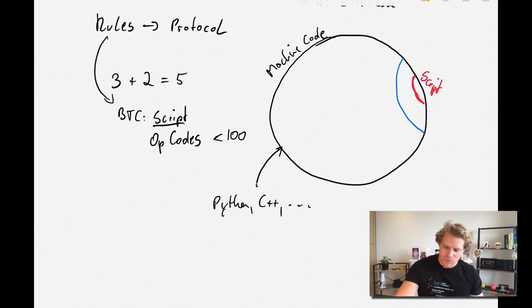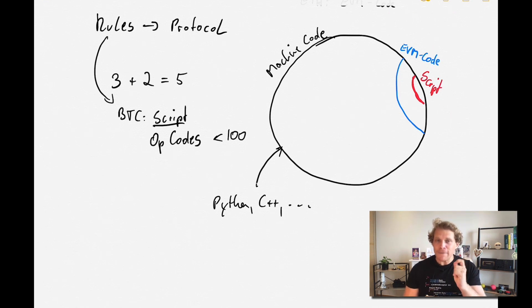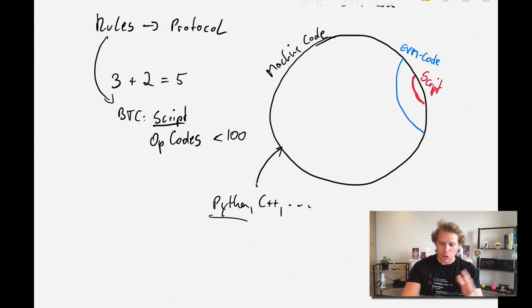And now when we look at Ethereum, Ethereum is larger, has way more possibilities, right? So this is the Ethereum Virtual Machine code. Now it gets very interesting. It's very difficult for these languages like Python to go and say we have all these possibilities, but we now only want to limit ourselves to Script, to those few opcodes that Script has.